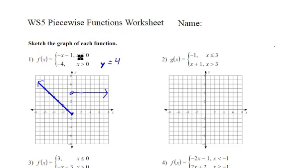So here's the graph of our piecewise function. When x is less than or equal to zero, we have f of x equals negative x minus one. When x is greater than zero, we have f of x equals negative four.